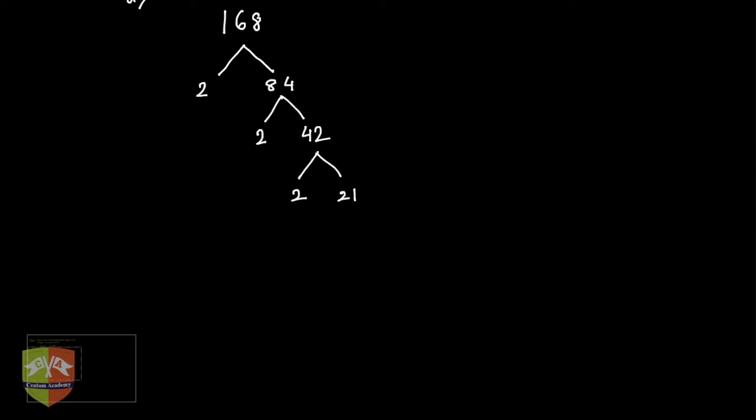Now can I go further down? I cannot really factorize 7 because this is already a prime number. All the numbers which we got by factorization process here, the last step, the last row, all are prime numbers. So 2 is prime, 2 is again prime, this 2 is also prime, 3 is prime, and 7 is prime.